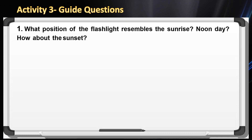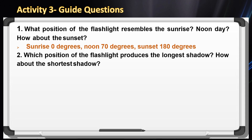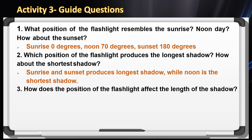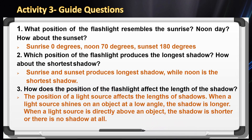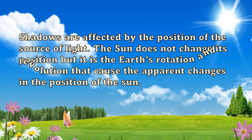To further deepen our understanding, let's answer the guide questions. One: What position of the flashlight resembles sunrise? Noonday? How about sunset? Two: Which position of the flashlight produces the longest shadow? How about the shortest shadow? Three: How does the position of the flashlight affect the length of the shadow? Shadows are affected by the position of the source of light. The sun does not change its position — it is the Earth's rotation and revolution that cause the apparent changes in the position of the sun.